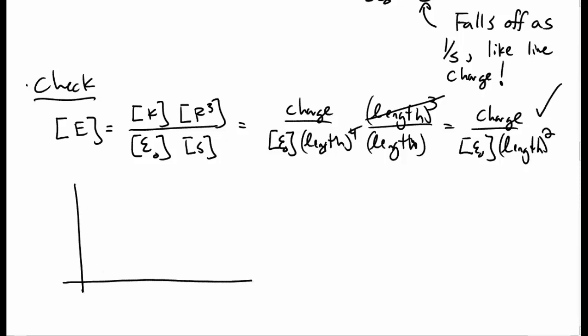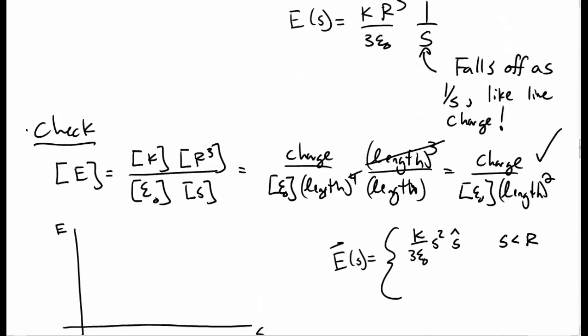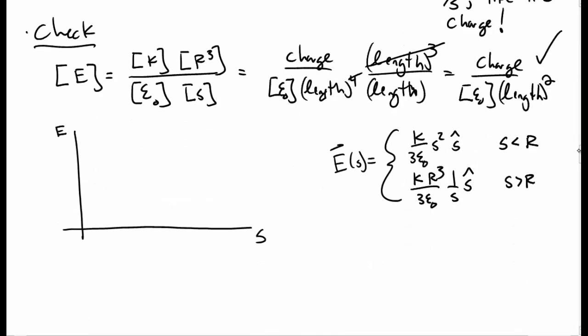Let's quickly draw a plot of the electric field as a function of s. Inside, the electric field is k/(3ε₀) s² ŝ, which grows quadratically. Outside, it falls off like 1/s. This was another example of using Gauss's law for cylindrical symmetry. You can check out the other videos for planar symmetry and for spherical symmetry.